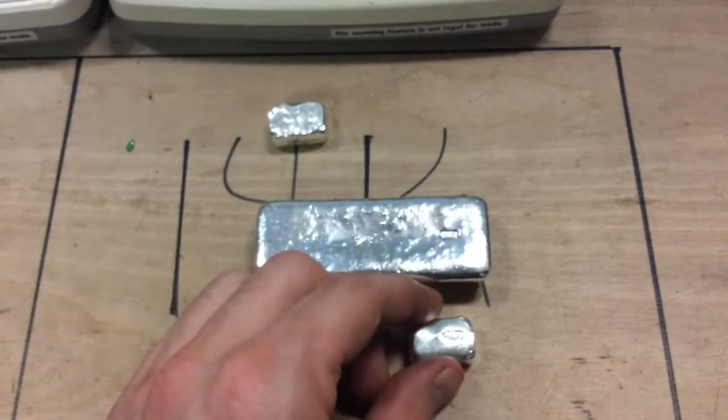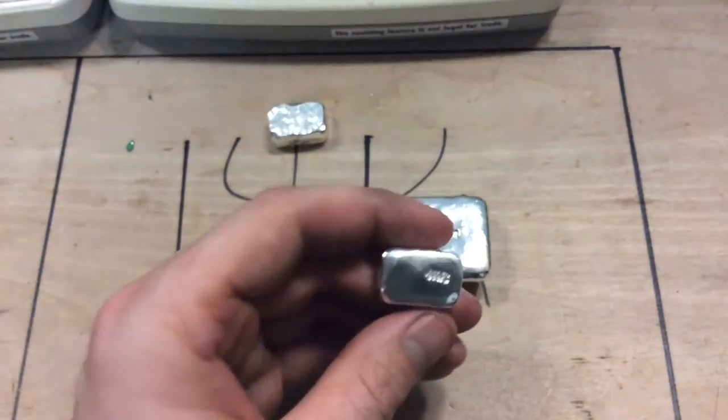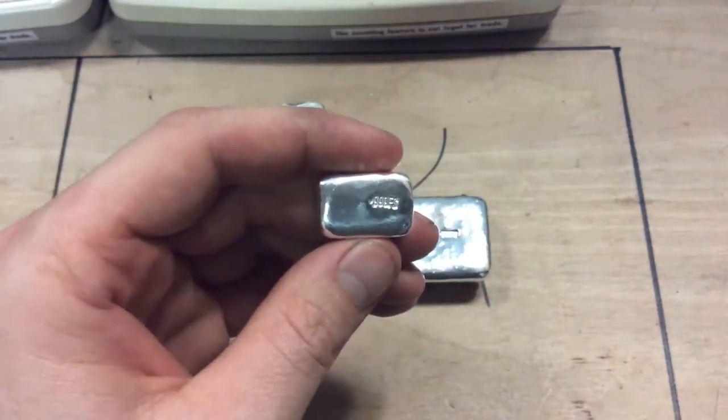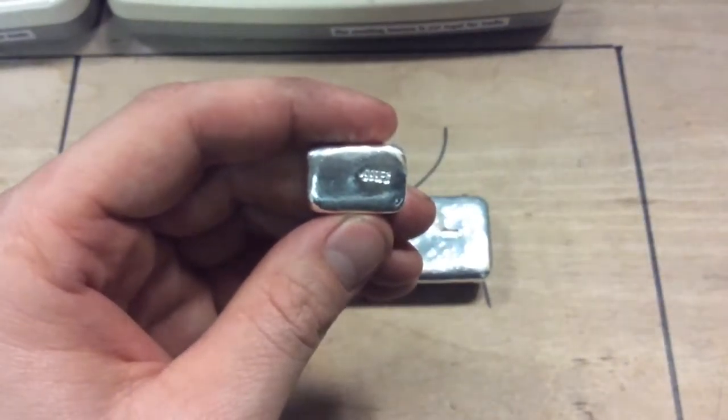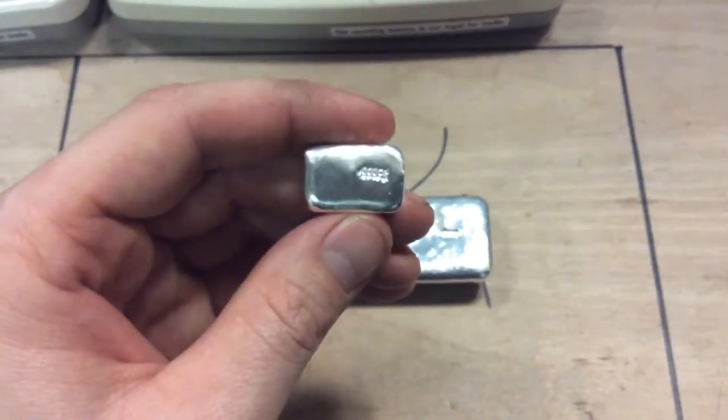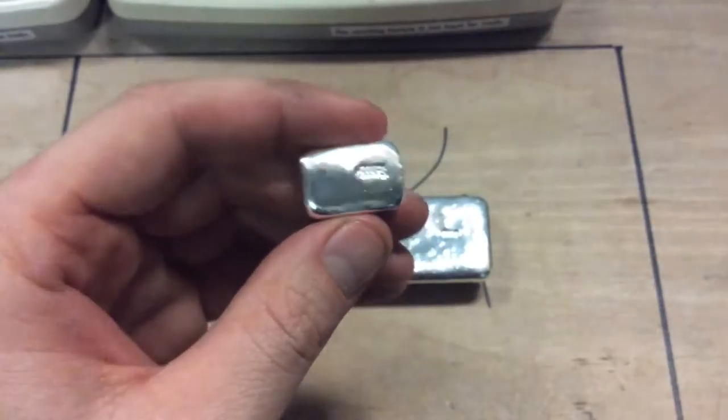The next one is the one-ounce non-hammered-top loaf bar. It's the same loaf bar mold except the top isn't hammered - it's just smooth.